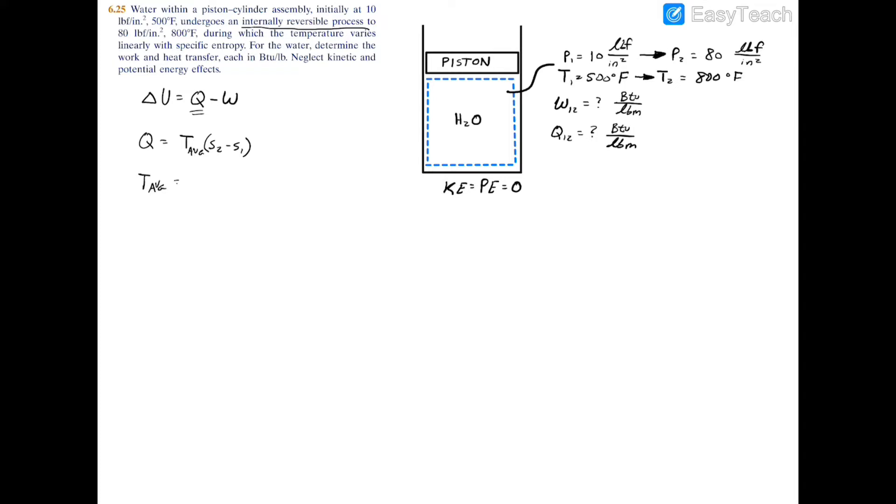T average equals 960 degrees Rankine plus 1260 degrees Rankine divided by 2, and that's going to yield you 1110 degrees Rankine. Of course, to get from Fahrenheit to Rankine all you have to do is add 460 degrees to the 500 and the 800.